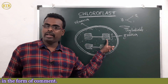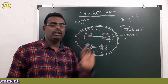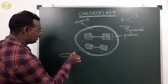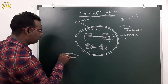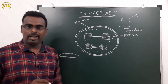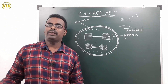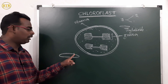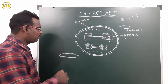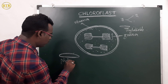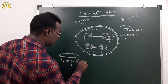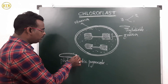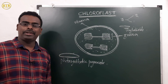Grana is made up of many thylakoids grouped together. If you see the thylakoid structure, the thylakoid is covered by a membrane. Inside the membrane of the thylakoid, there are some substances present in different colors. These different-colored substances are present in the thylakoid membrane.